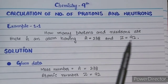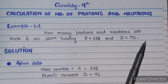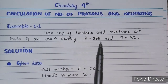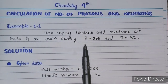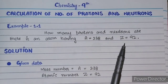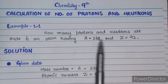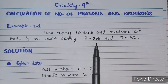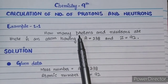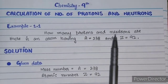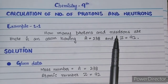In the previous lecture I told you that mass number and atomic mass is represented by A, so this is the mass number. And this is the atomic number. So we have two things given.